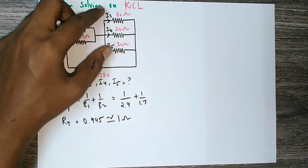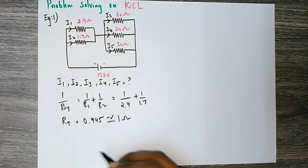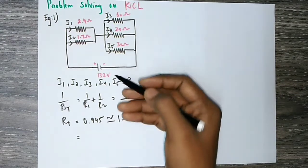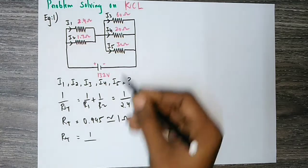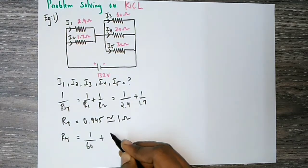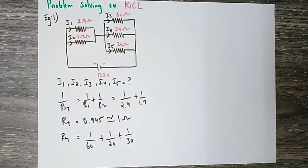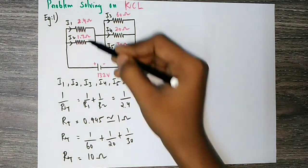Now we have 3 resistors in parallel. Using the same formula: 1 over 60 plus 1 over 20 plus 1 over 30, which gives us a total of 10 ohms for this parallel group.